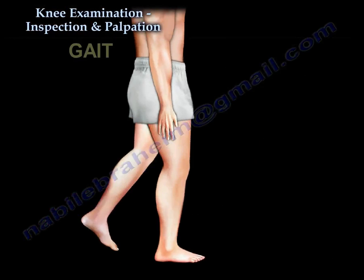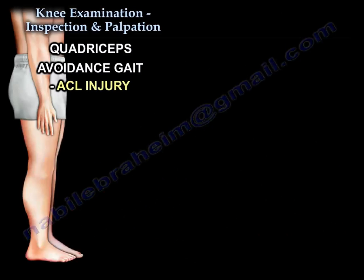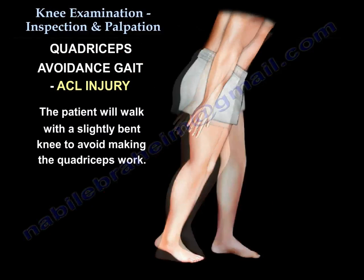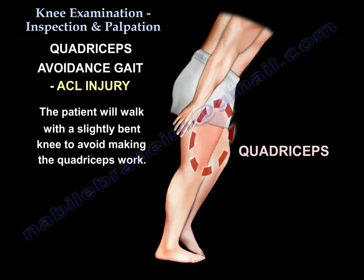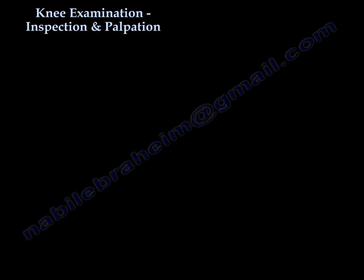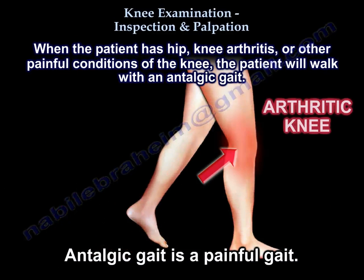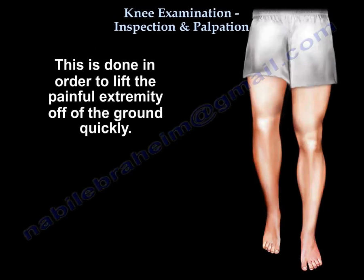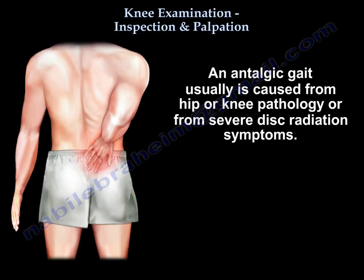After that we check the gait. We check for quadriceps avoidance gait, which occurs with ACL injury — the patient walks with a slightly bent knee to avoid making the quadriceps work. We also check for antalgic gait, which is a painful gait where the patient lifts the painful extremity quickly off the ground.